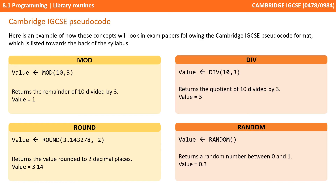We've already gone through mod and div in a previous video, which are used to perform integer division, so we'll look at round and random in a bit more detail. Round is quite simple — it takes a number with a fractional component and a number representing the number of decimal places you want to round to. So here, round(3.143278, 2) will return a value of 3.14, rounded down to two decimal places.